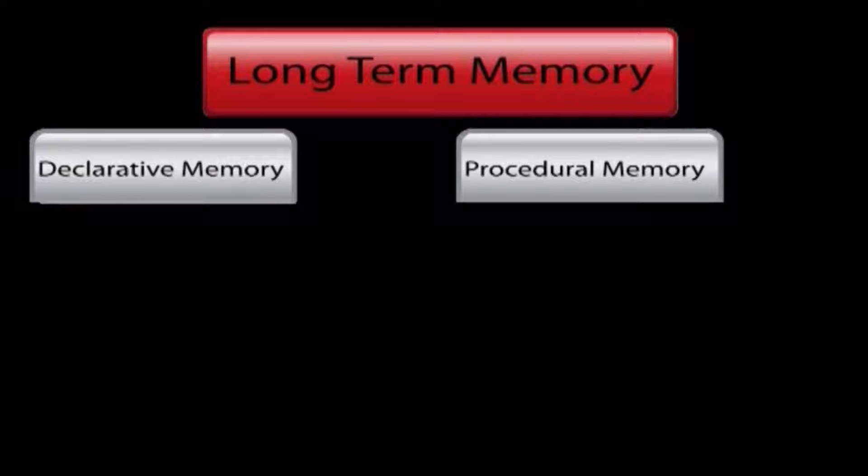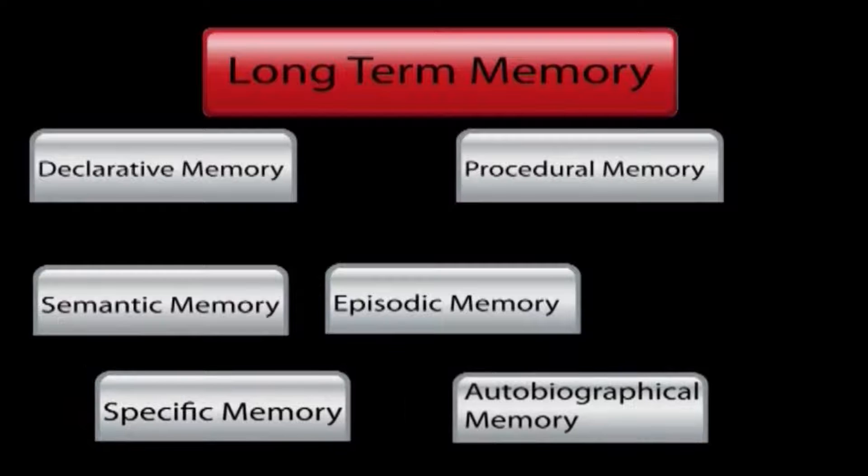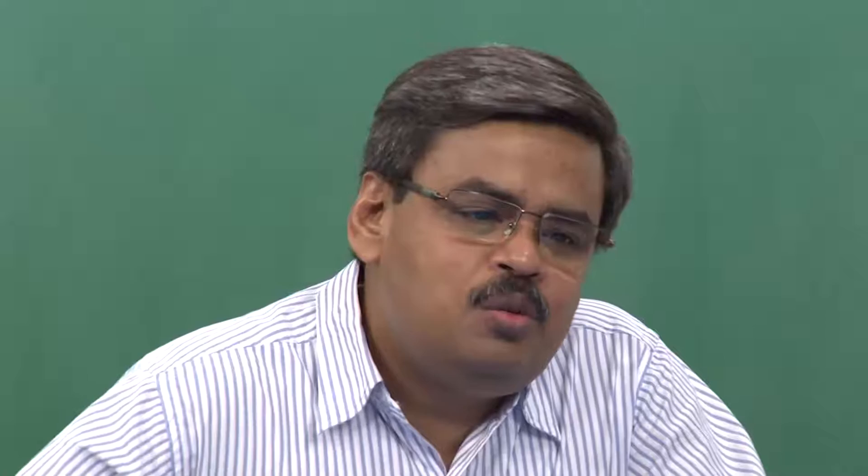Long-term memory can be of two types: declarative memory and procedural memory. Declarative memory can also be divided into semantic and episodic memory, and further, episodic memory can be specified as specific memory and autobiographical memory. Based on our discussion, we primarily divide memory into sensory register, short-term storage, and long-term storage.